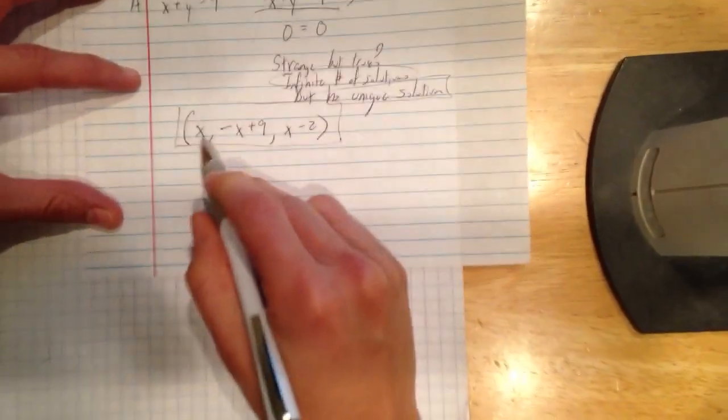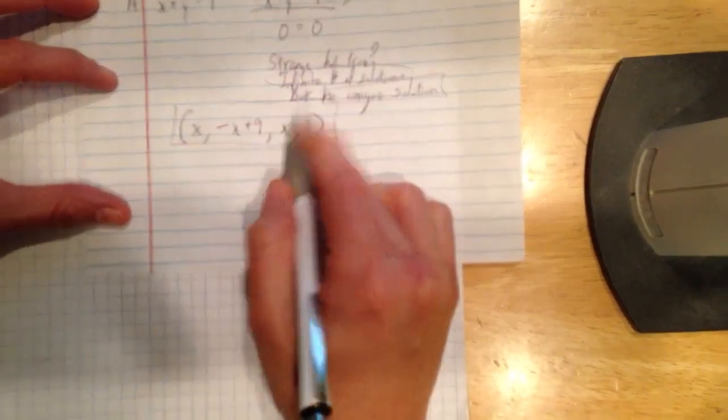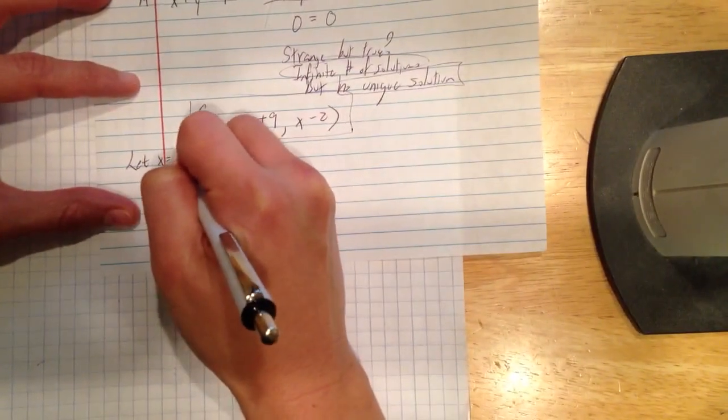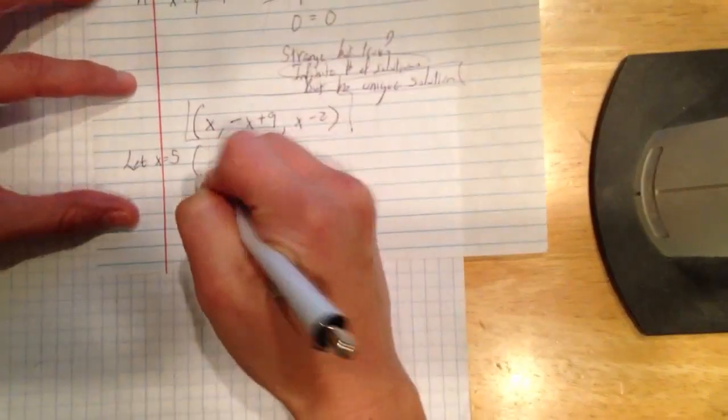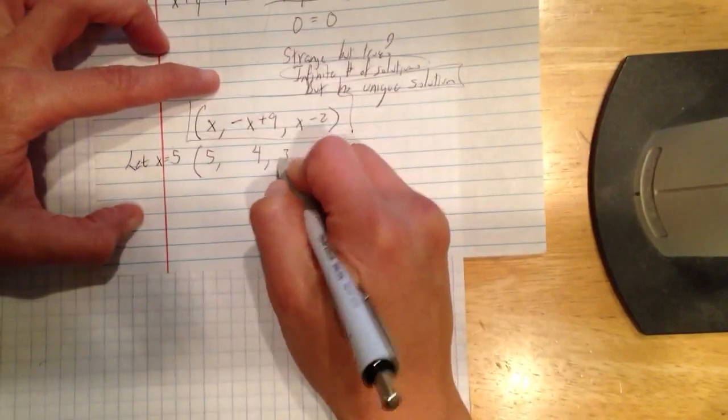So, and you can let x be whatever, so x can be an infinite number of things, and you can get that. So let's find one, right? So let's let x be your favorite number. Let's let the x be 5. So if x were 5, then y would be negative 5 plus 9 is 4, 5 minus 2 is 3.